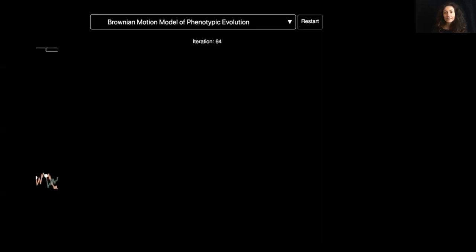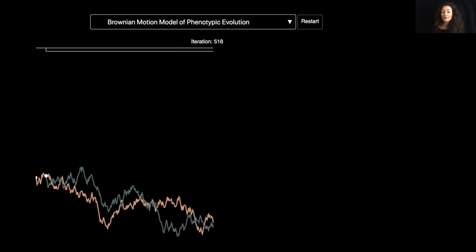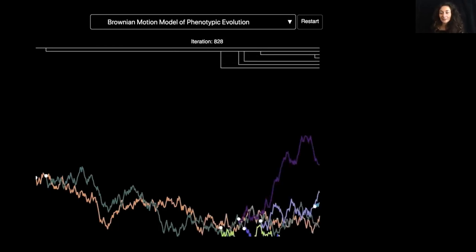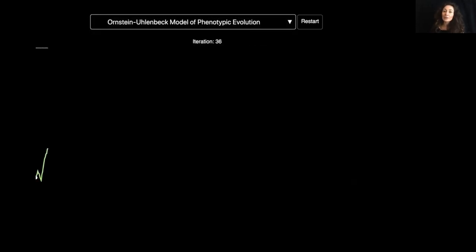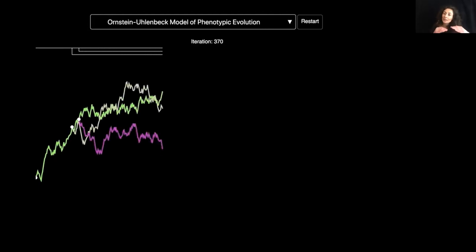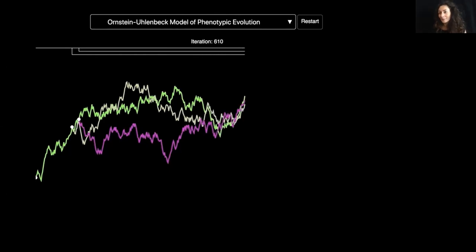This is, for example, the simulation of a Brownian motion model, where the phenotypes are assumed to vary randomly along the phylogenetic tree. In the next simulation, we see the Ornstein-Uhlenbeck model, where the phenotype is also assumed to vary randomly along the phylogenetic tree, but striving towards an advantageous adaptive value. We also tested the early burst model. Among these three that we tested, the Brownian motion model fit the best to our data.